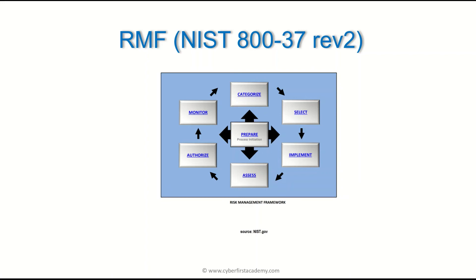The next phase is implement. Now that you've selected the security controls that apply to that low, moderate, or high system, you determine how to configure and implement them. You work with your admins, who will install what needs to be installed, set firewall rules, and handle things of that nature.